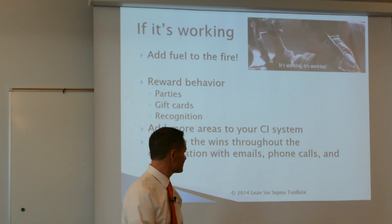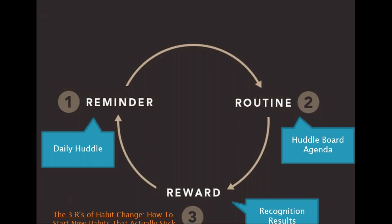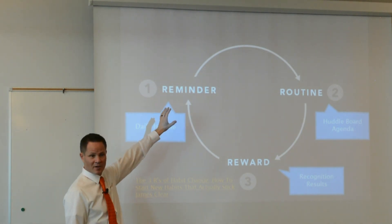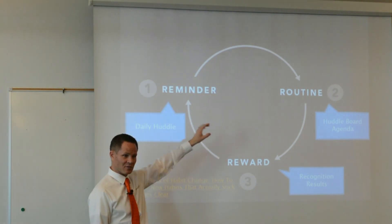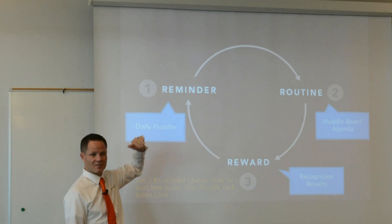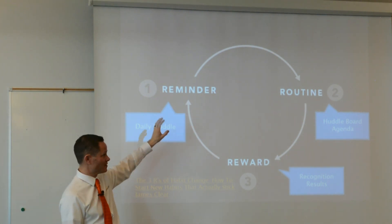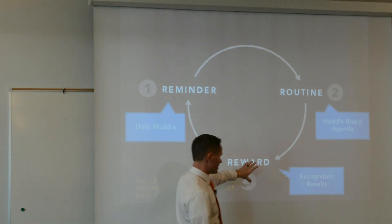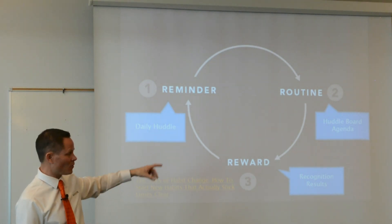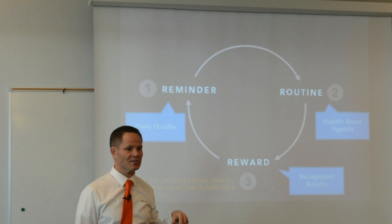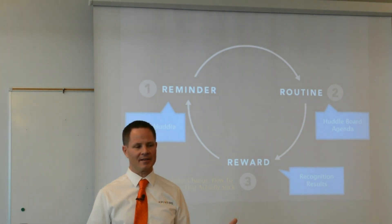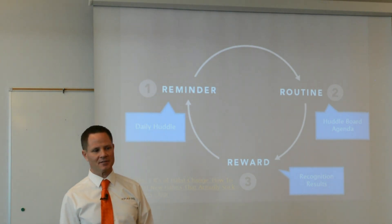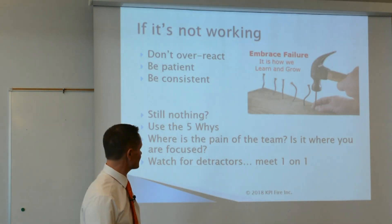To form a habit, use the three R's of habit change: Reminder (trigger), Routine, and Reward. Your trigger could be every morning's daily huddle, or anytime you miss a KPI. Your routine is the daily huddle agenda — going through metrics and the continuous improvement board. Then you must reinforce good behavior with reward. If you fail to reward, why would employees continue the routine? We want to make continuous improvement fun.